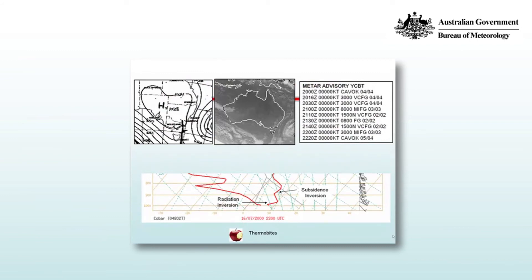Our last example shows a large high over southeastern Australia and cloud free conditions, as you can see from the satellite image. In the trace for Cobar you can see a subsidence inversion again above 900 hPa and a low level radiation inversion. Looking at the sequence of metadata, winds are calm at the surface from 2000 to 2220, and conditions are initially CAVOK — cloud and visibility okay — with visibility greater than 10 km, no cloud below 5000 feet, and the temperature and dew point are the same. 16 minutes later there's fog in the vicinity with a visibility of 3000 meters, persisting until 2100 where there are fog patches with visibility of 8 kilometers, then fog in the vicinity again with visibility down to 1500 meters at 2110. During this time the temperature and dew point have dropped together — the air has become cooler and the vapor is being turned into fog, which is why the dew point is decreasing.